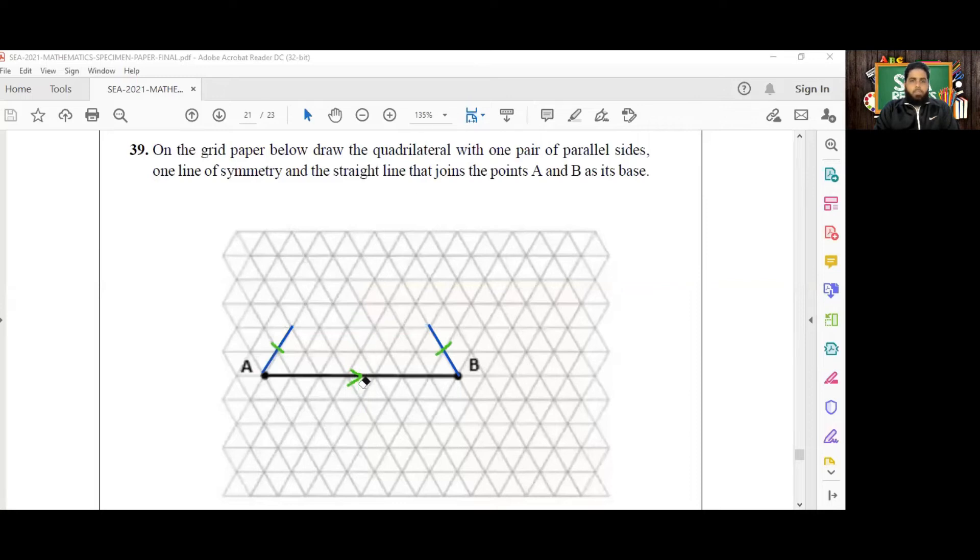Both of these legs are the same length, and we can keep making more and more of these. I'll just show you one more. We'd basically be going up diagonally three, across, and back down diagonally three. Again, it's a quadrilateral, two parallel sides or a pair of parallel sides, one line of symmetry, and the straight line joining A and B is the base of this isosceles trapezium.